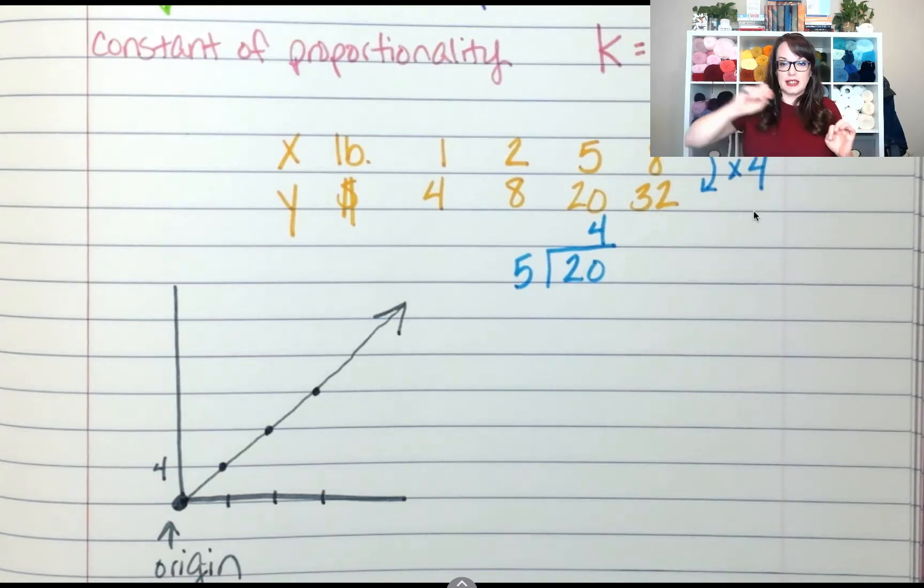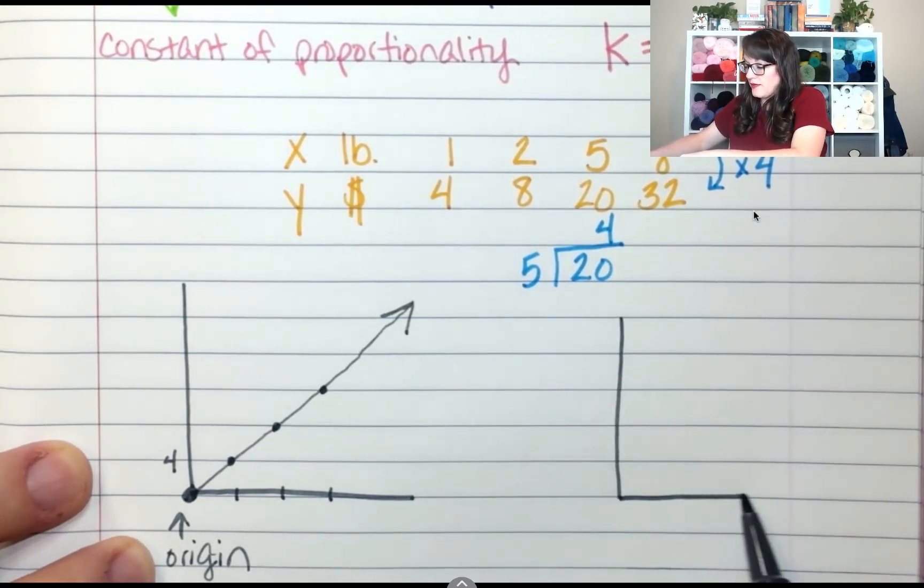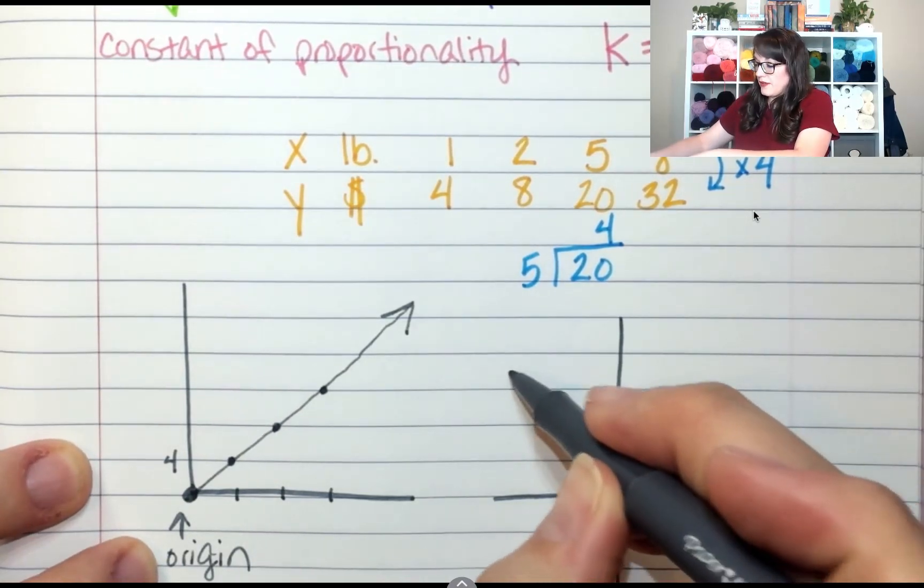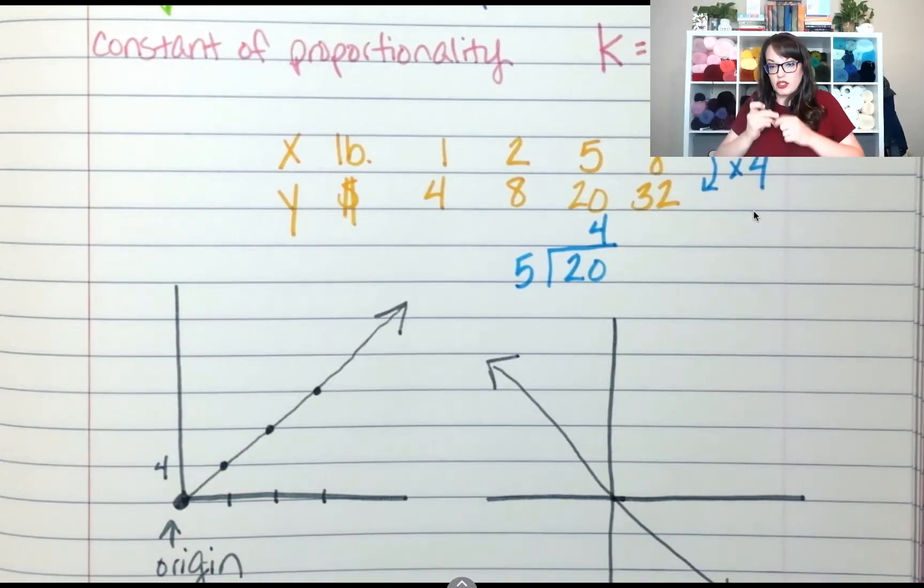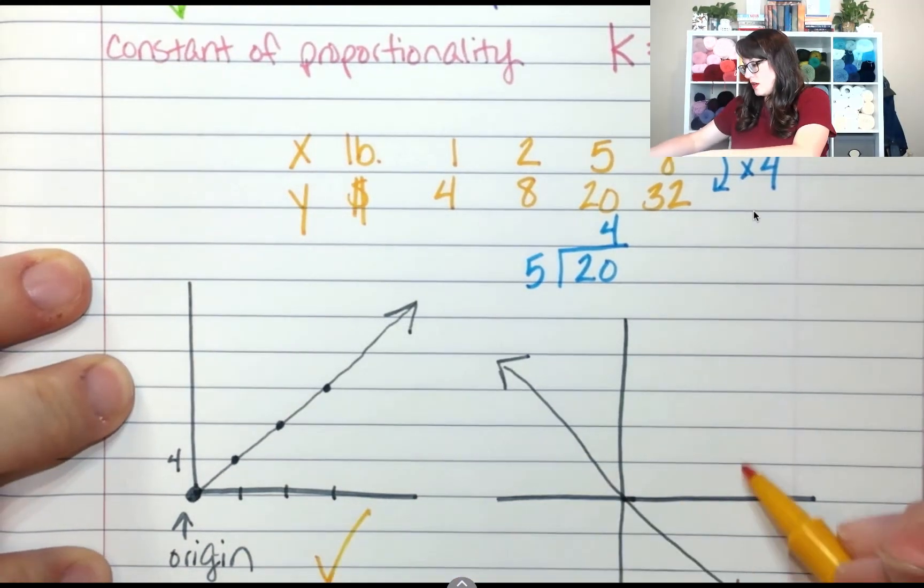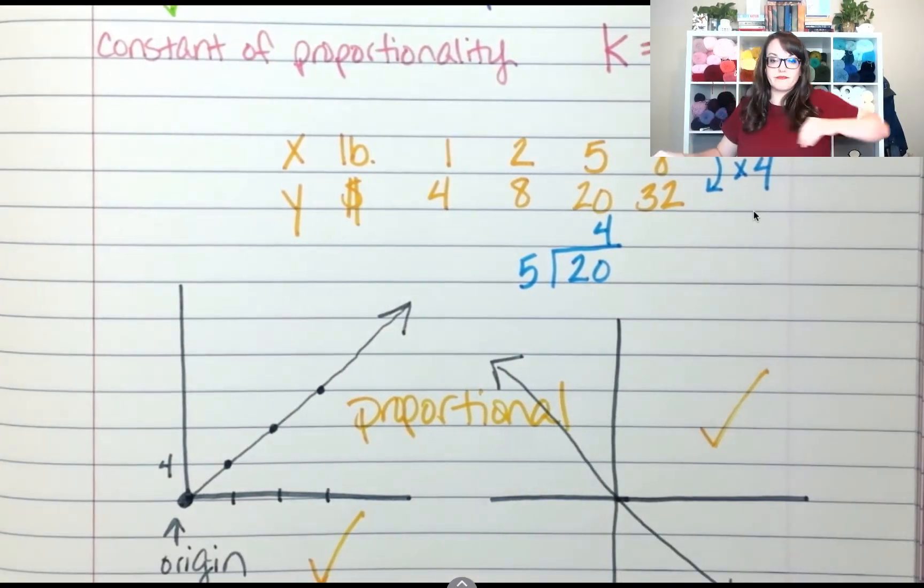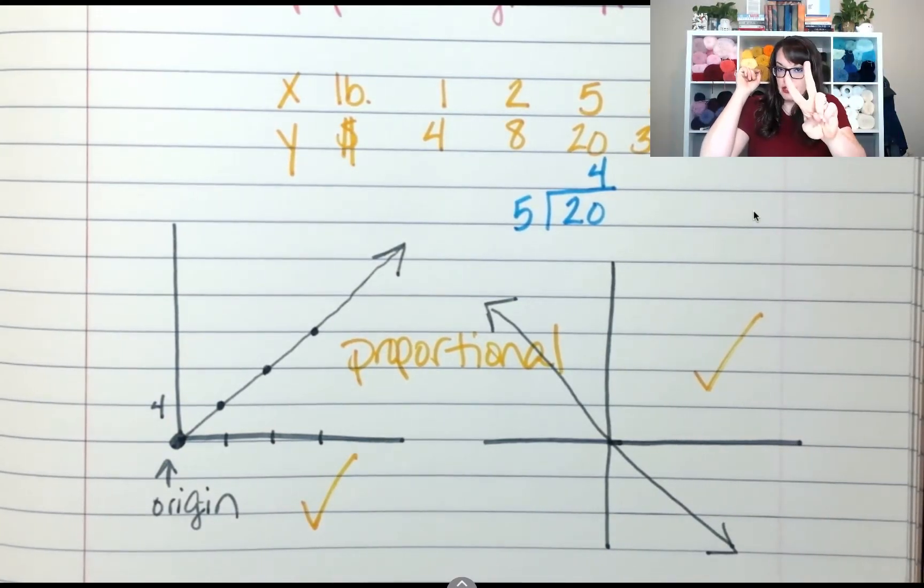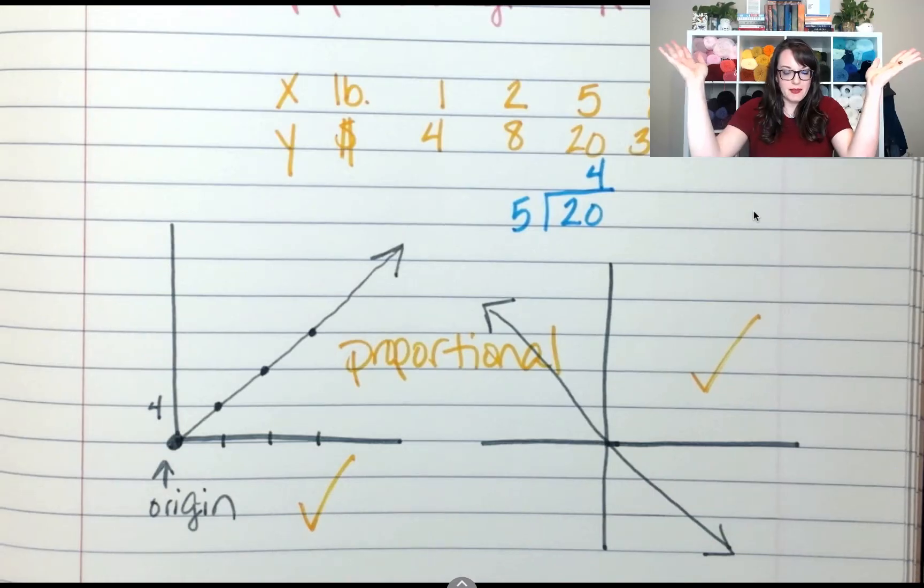It doesn't have to consistently rise. It could fall. So another example of a proportional relationship on a graph. I need all my quadrants for this one. Another example would be if it went like this. That's okay too because it's a straight line sort of and it goes through zero zero. So these are both proportional. Both examples of proportional relationships because straight line goes through zero zero. Straight line goes through zero zero. That's all it takes to be a proportional relationship.